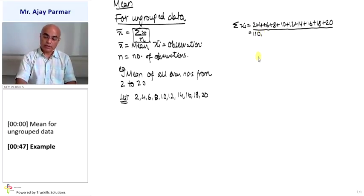Now, number of observations - for that, let us count all the observations: 1, 2, 3, 4, 5, 6, 7, 8, 9, and 10. So n is 10.